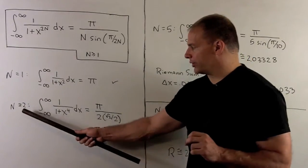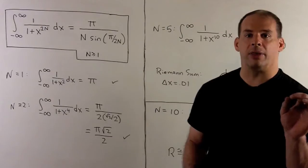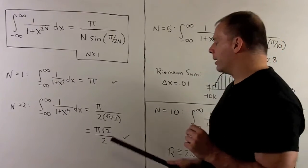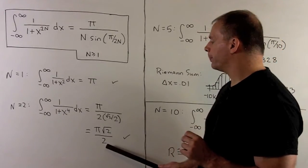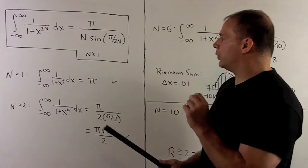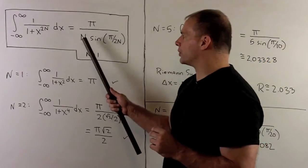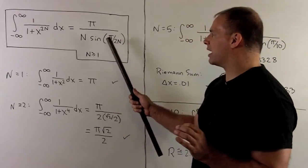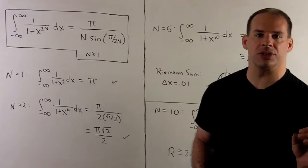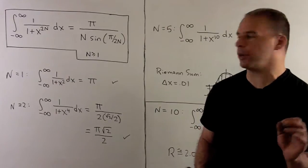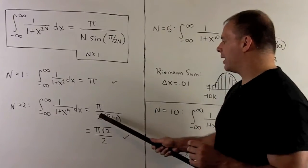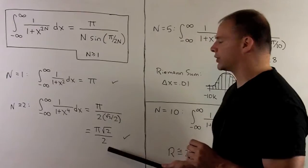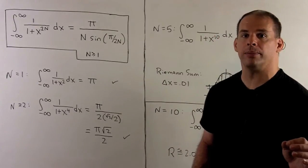For n equal to 2, we worked that out in the previous video and got π times √2 over 2. If we use the formula, we have π over 2 times sine of π/4. Sine of π/4 is √2/2, and when we clean this up we get π times √2 over 2. That checks out.